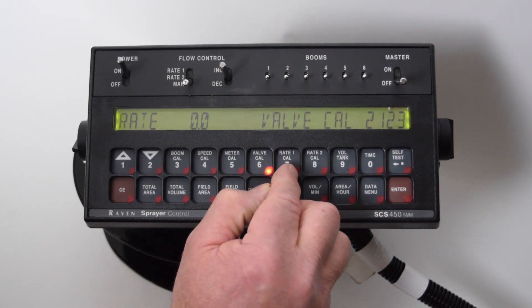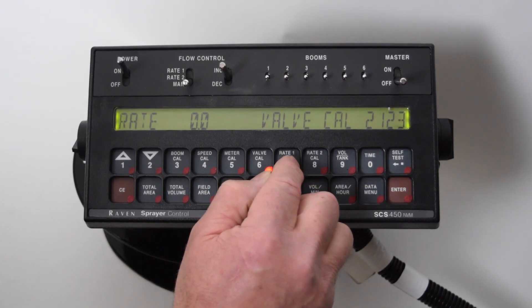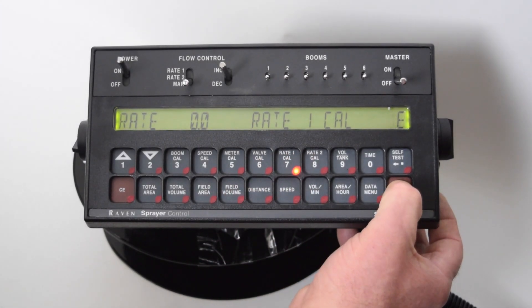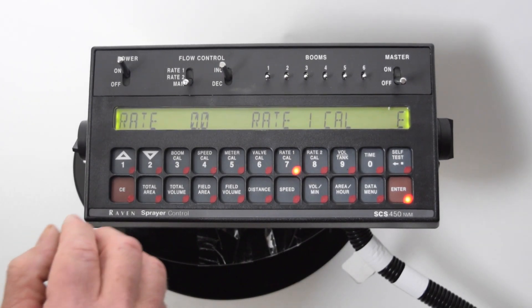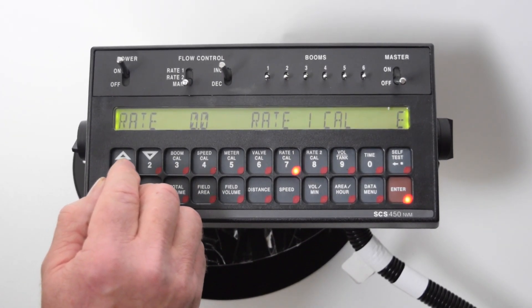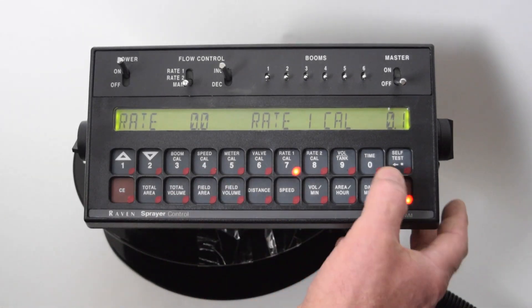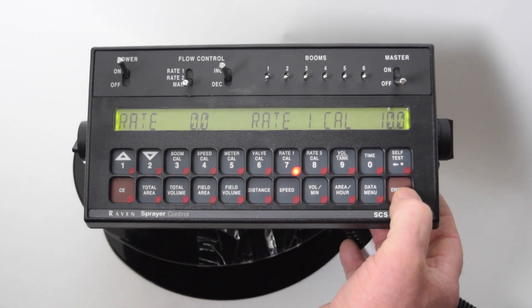Then we go to button number seven, which is our first set rate. And we usually figure 10 gallons per acre. This has a decimal so you're going to want to go 100. Enter.